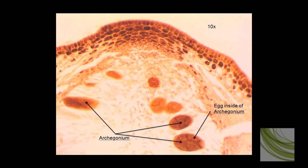Here, using the 10X objective on that last slide, we can now see these archegonium, and you can very clearly see eggs inside of that archegonium. We can also see very clearly the opening into the concepticle, which we call the osteole. This wraps up my discussion of the Fucus slide.